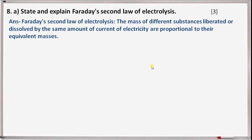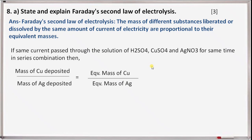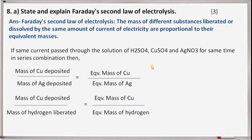Next question 8a: state and explain Faraday's second law of electrolysis. The mass of different substances liberated or dissolved by the same amount of electricity are proportional to their equivalent masses. If the same current is passed through solutions of sulfuric acid, copper sulfate, and silver nitrate in series, then: mass of copper deposited divided by mass of silver deposited equals equivalent mass of copper divided by equivalent mass of silver. Similarly, mass of copper deposited divided by mass of hydrogen liberated equals equivalent mass of copper divided by equivalent mass of hydrogen.